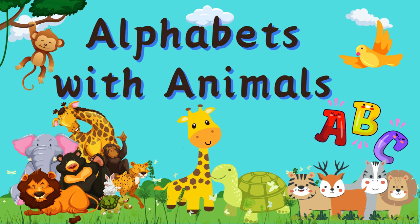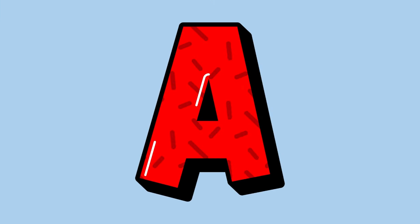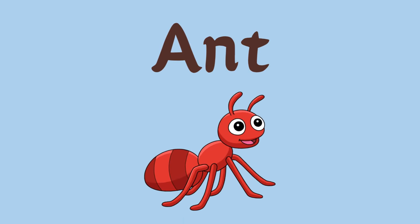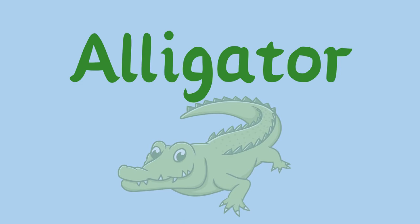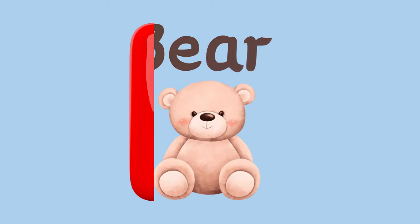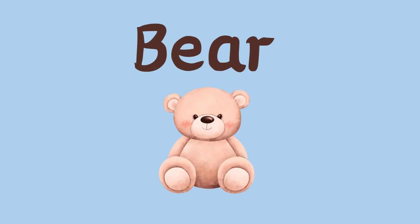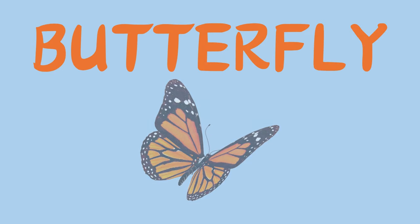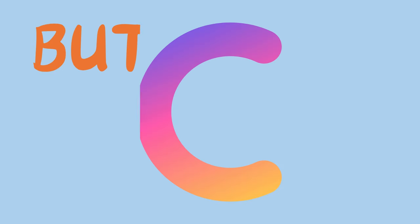Alphabets with Animals. A is for Ant. A is for Alligator. B is for Bear. B is for Butterfly.